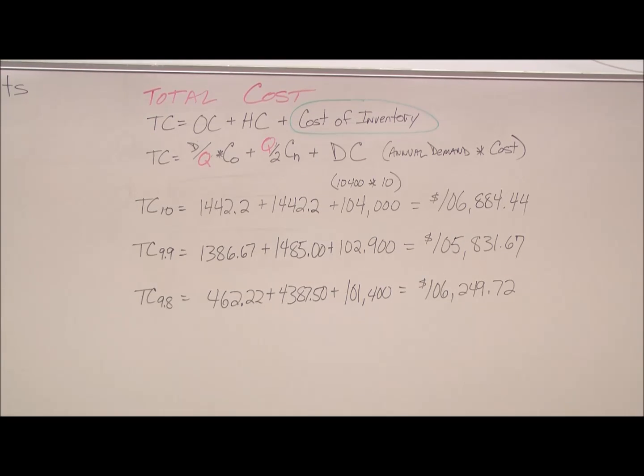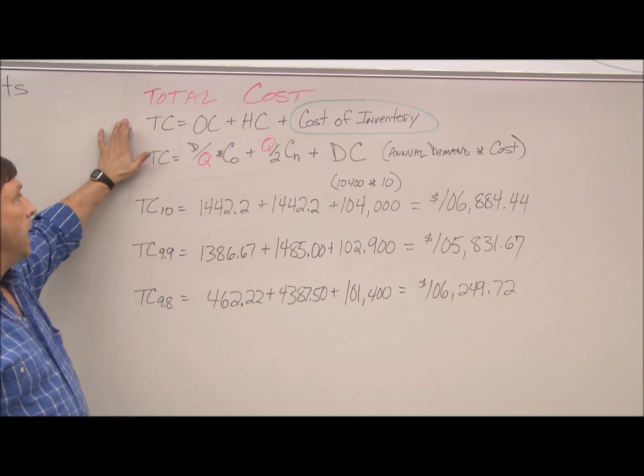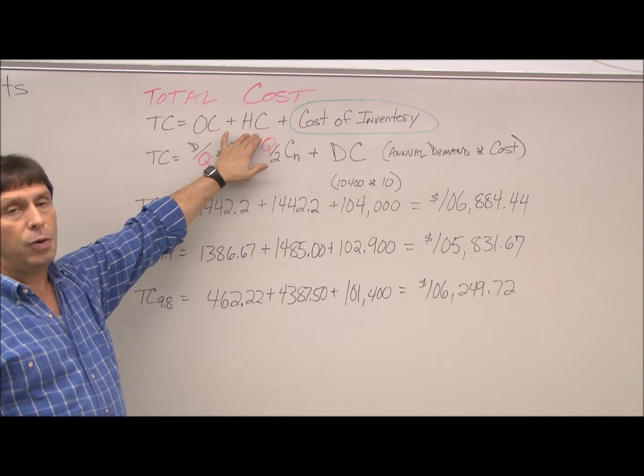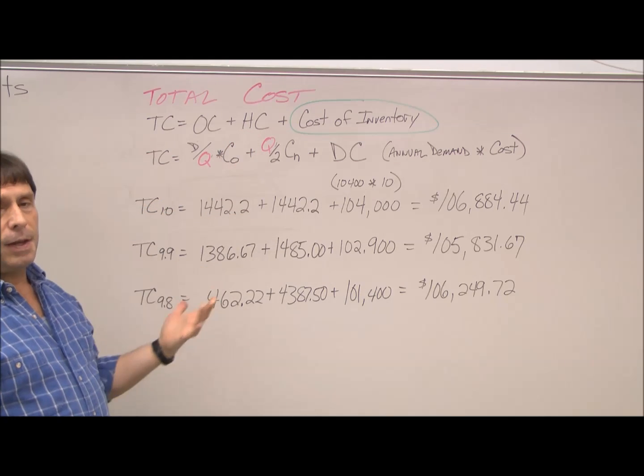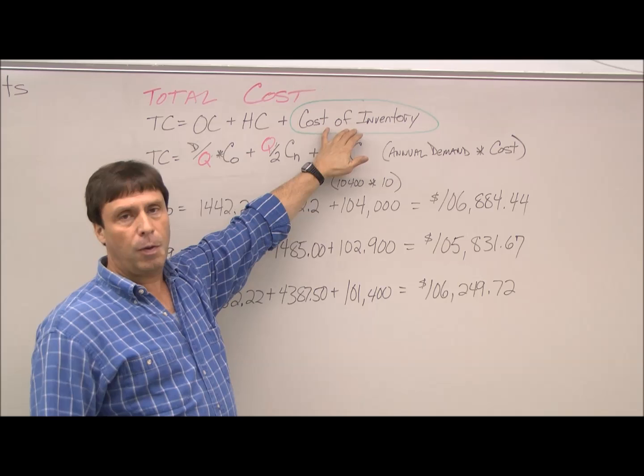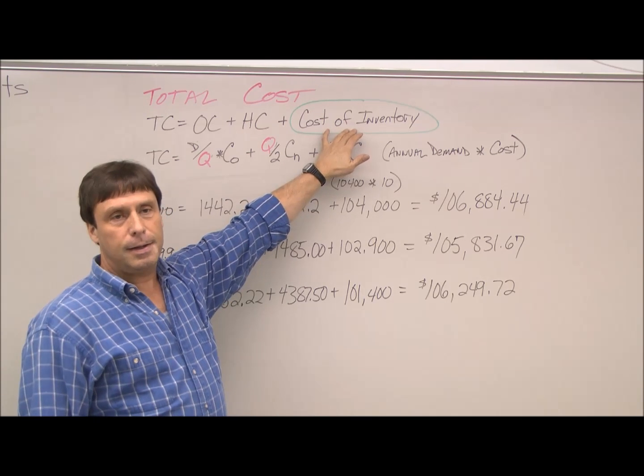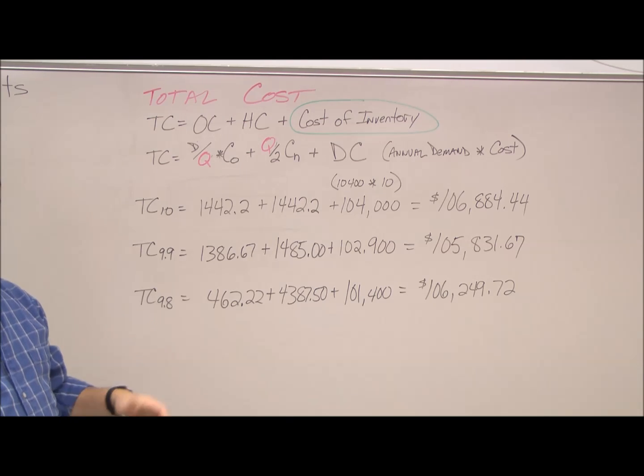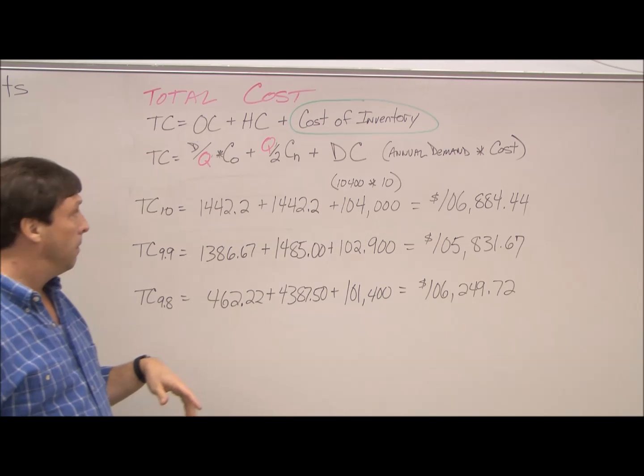Finally, we look at the total cost. The total cost we've been looking at is our ordering cost, our setup cost, plus our holding cost. For this cost calculation, we also add the cost of inventory. Before, we've been ignoring that, because all the cost inventory would do would scale. This time, it makes a difference, so we add it in.